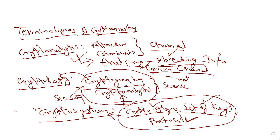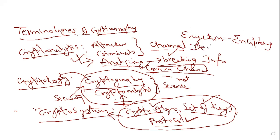For encryption, another name is enciphering, and for decryption, another name is deciphering. Enciphering and deciphering are alternative names for encryption and decryption, because the algorithms are called ciphers. These are very important words we come across while reading cryptographic concepts.